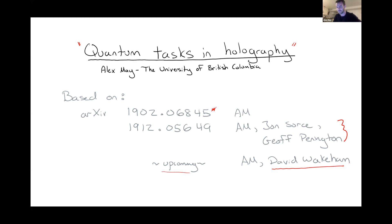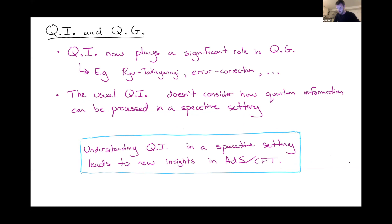We all know that quantum information plays a significant role in quantum gravity — there are lots of examples, from the Ryu-Takayanagi formula to the role that error correction plays in AdS/CFT and many other topics. But something I want to emphasize today is that the usual treatment of quantum information doesn't really consider how quantum information can be processed in a spacetime context. If you open your favorite textbook on quantum information theory, you're unlikely to find a spacetime diagram.